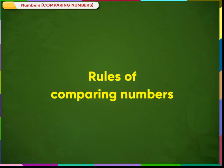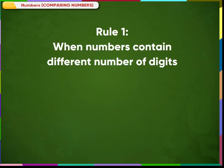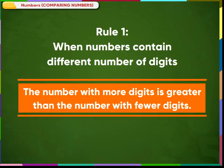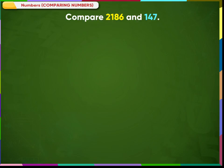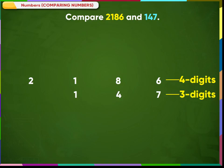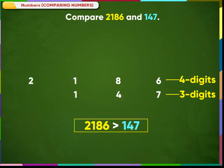Let us understand the various rules for comparing numbers. Rule number 1: when numbers contain a different number of digits, the number with more digits is greater than the number with fewer digits. For example, compare 2186 and 147. 2186 has 4 digits and 147 has 3 digits. Therefore, 2186 is greater than 147.